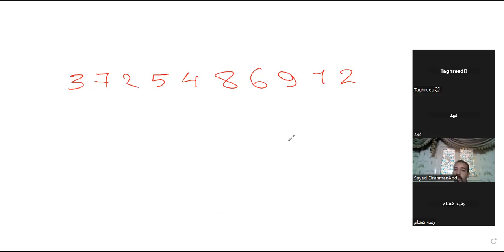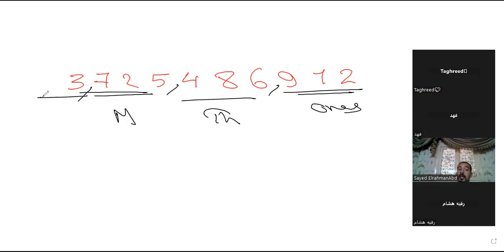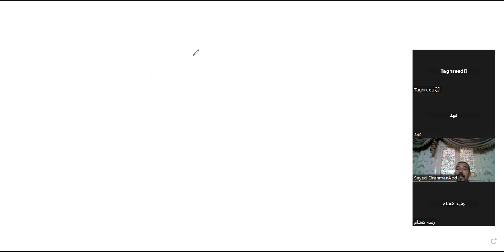Excellent! So if I need to read any number, I place commas after every three digits from the right, then write the name of each period: the first period is ones, the second is thousands, the third is millions, and the last is billions. So this number is three billion, seven hundred twenty-five million, four hundred eighty-six thousand, nine hundred twelve.